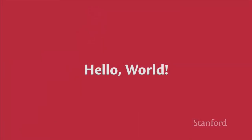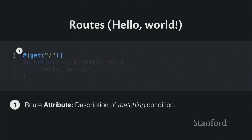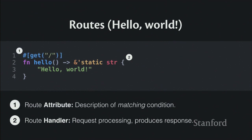Here's the Hello World of Rocket — the simplest Rocket application you can write. The thing at the top is a route attribute: it declares the matching conditions. This one says we handle all GET requests to the root path. The handler below is the thing that does the processing — it includes types that validate the request and produces a response. In this case, it produces a static string. That's what Rocket applications look like: just composed of routes.